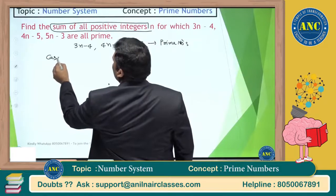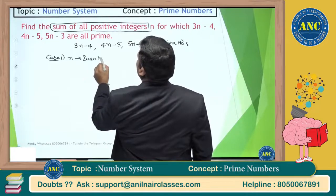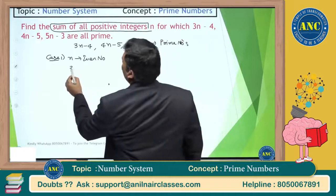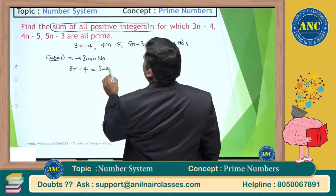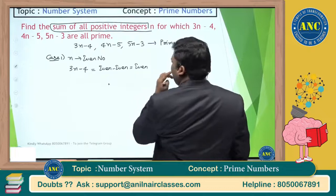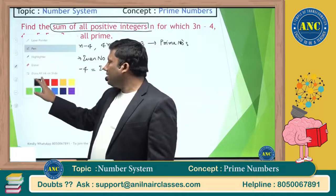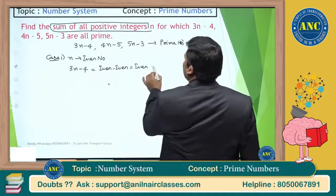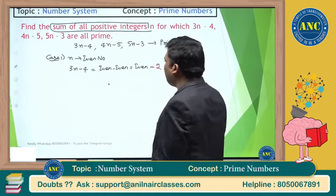Case 1: n is an even number. If I take an even number, 3n minus 4 becomes even times 3 minus 4. Even minus even is an even number. For 3n minus 4 to be prime and even, the only possibility is 2.